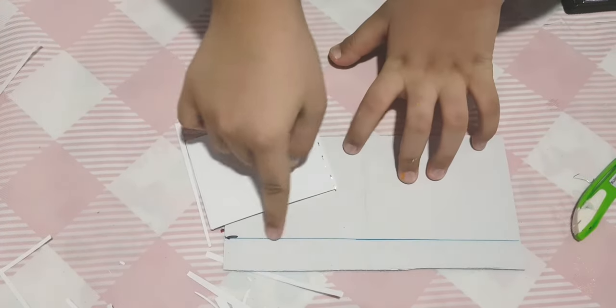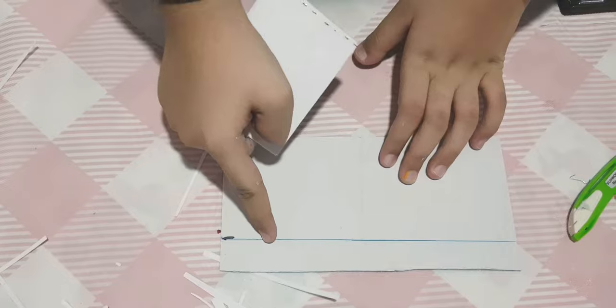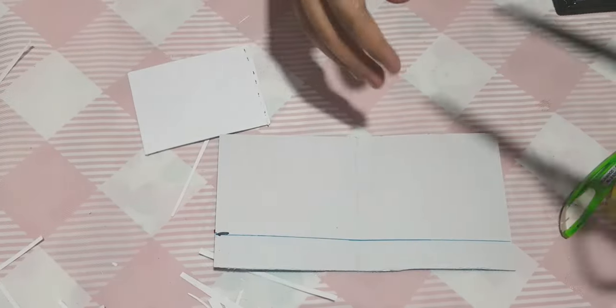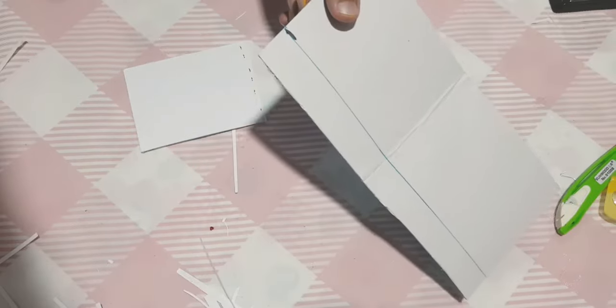Now I have to take the measurement of my diary. This line is the extra one and I'm gonna cut it with the scissors. Cutting it like this, cut it off.